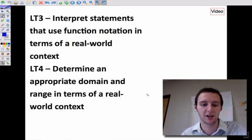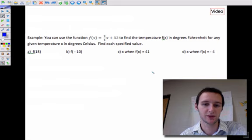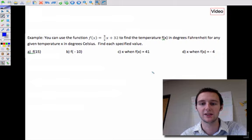Okay, so this first example, here's an example of a function. This function f(x) equals 9 over 5x plus 32. This calculates the temperature in degrees Fahrenheit. So f(x) represents degrees Fahrenheit for any given temperature x in degrees Celsius.